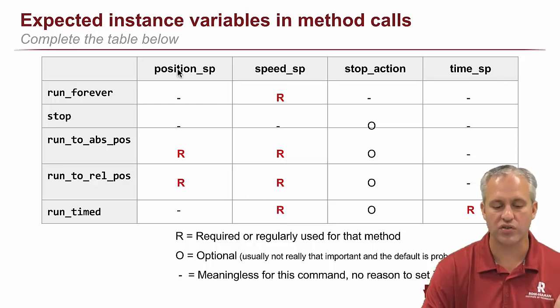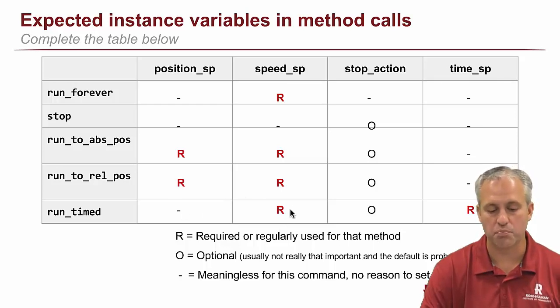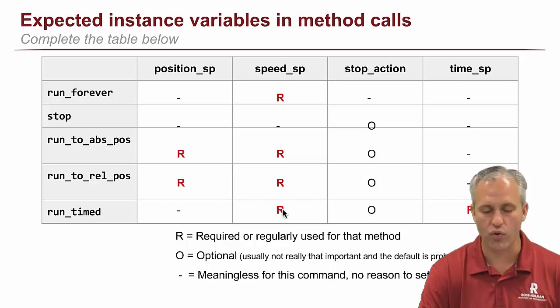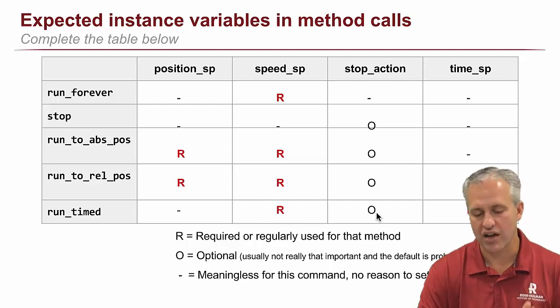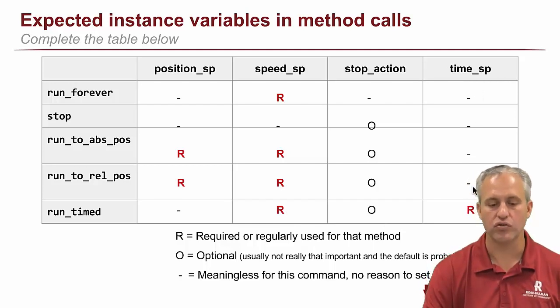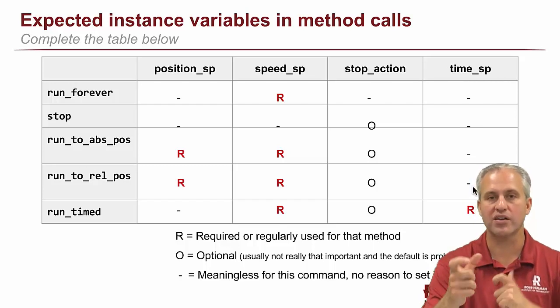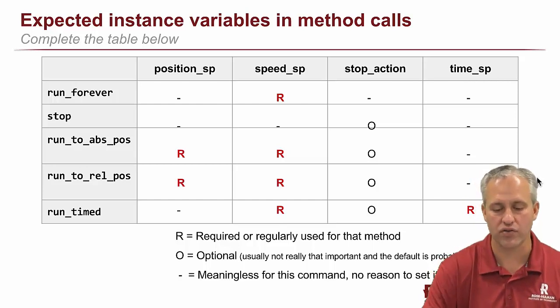What about run time? What would you do with run timed? So with run timed, the position doesn't make any sense. But the speed is used. It's recommended. It's not always required. Stop action and never really care that much about it. And then time_sp is used here. So those are kind of what you would expect to pass in to those methods.